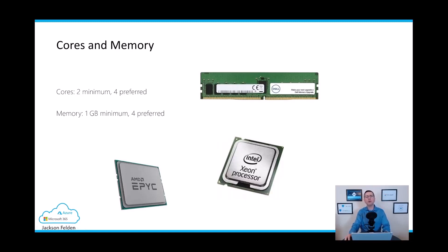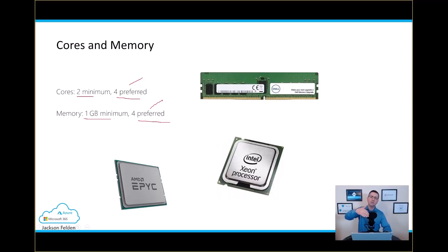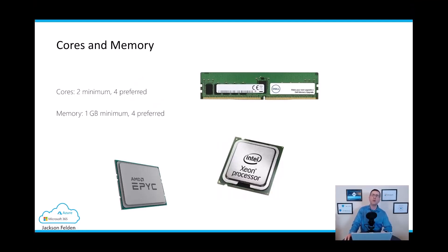When talking about hardware, the minimum cores required is two, but the preferred is four. For memory, the minimum is 1 GB but the preferred is 4 GB. From my own lab and client implementations, it is possible to onboard servers with two cores and two gigabytes of RAM and it works. However, during a full scan or automated investigation where MDE goes deep into the system checking every registry key and file, if you don't have the preferred hardware, things will simply take more time to complete.